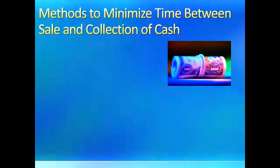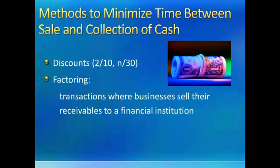Collecting cash in a timely manner is always important to businesses. Two approaches include offering discounts for timely payment — for example, 2/10, net 30, meaning a 2% discount if paid within 10 days — and factoring accounts receivable, where businesses sell their receivables to a third party. The third party then pays the business cash right away, and the customer becomes obligated to the third party.